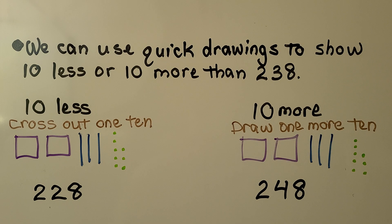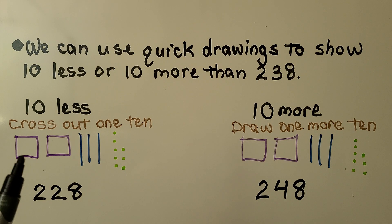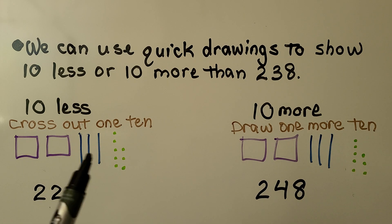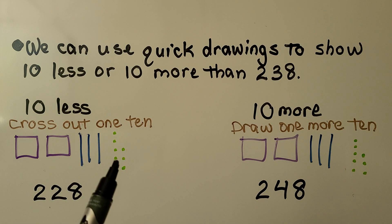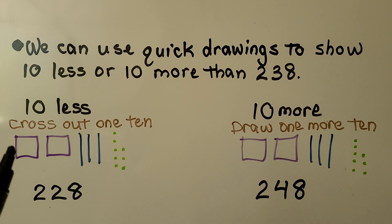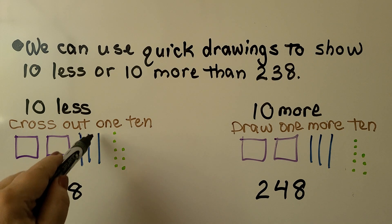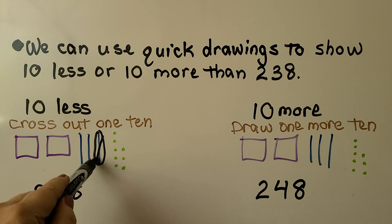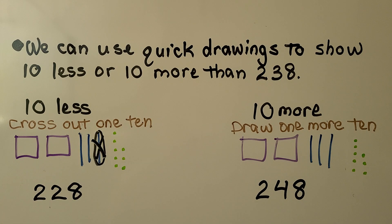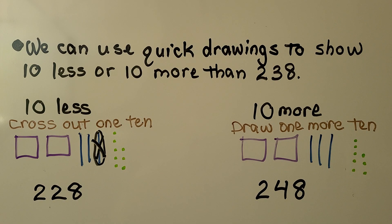We can use quick drawings to show 10 less or 10 more than 238. We make a quick drawing for 200, three tens, eight ones. And for 10 less, we cross out one 10. Here's one 10 — we cross it out. Now we have 228.